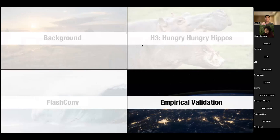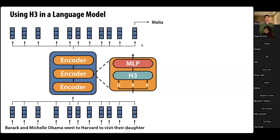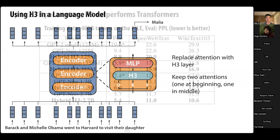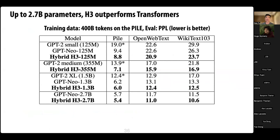Now let's move to empirical validation. We took a standard transformer backbone, swapped out attention layers for H3, keeping two attention layers — one at the beginning and one in the middle — as that gave the best performance. As we scaled this model up, H3 outperformed similarly-sized transformers, shown here by perplexity evaluations on the Pile where lower is better.